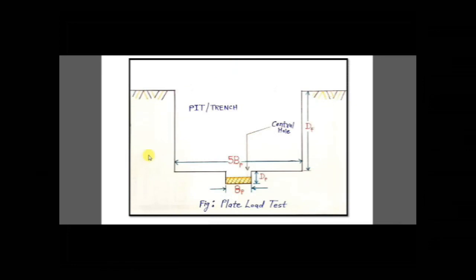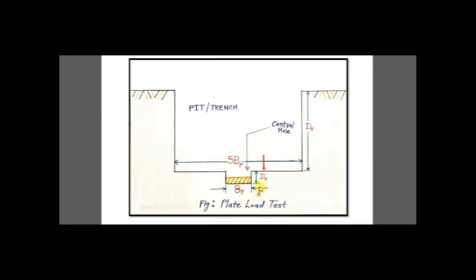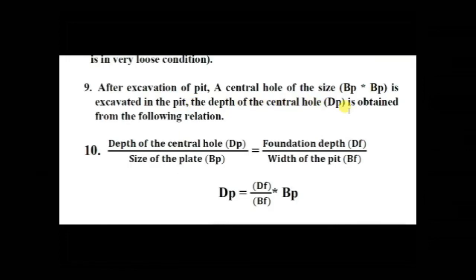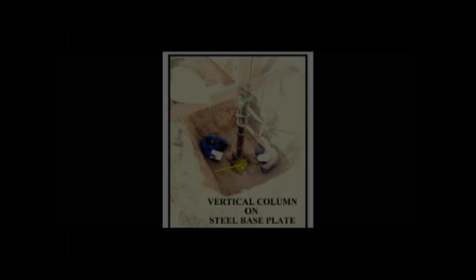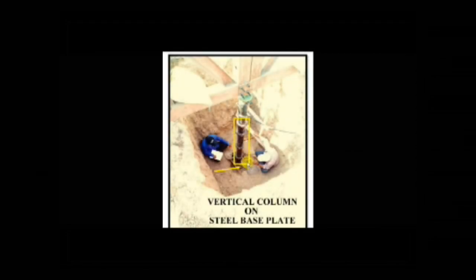After excavation of the pit, a central hole of size BP × BP is excavated in the pit, where BP is the depth of the central hole. The depth of the central hole DP is obtained from the relation: DP is equal to DF divided by VF multiplied by VP, where DF is the foundation depth and VF is the width of the pit. After arranging the plate in the central hole, a vertical column is arranged on the steel plate. A hydraulic jack is placed on top of this vertical column, and loading to the plate is provided with the help of the hydraulic jack.